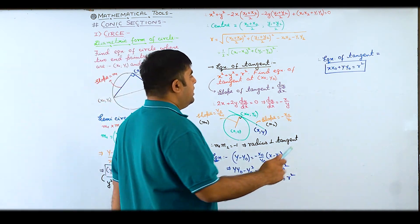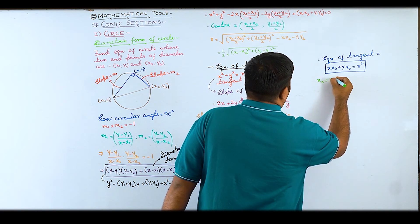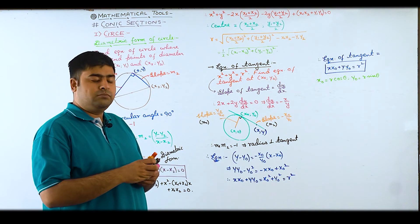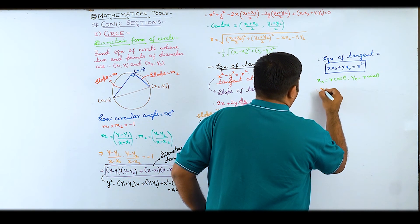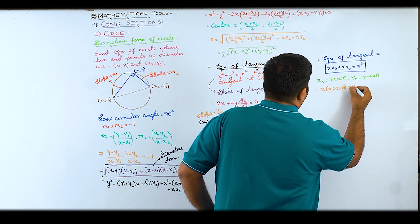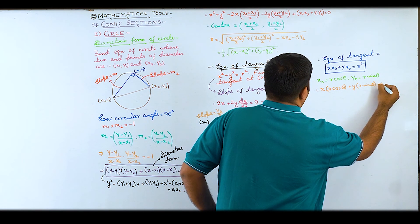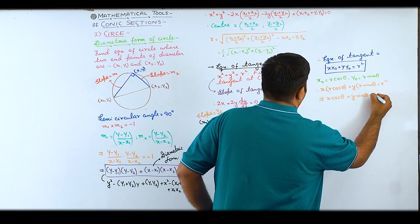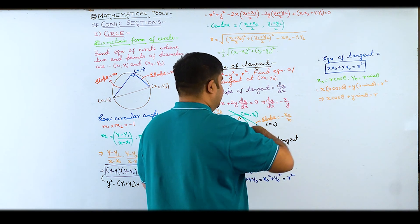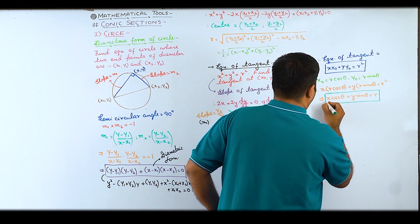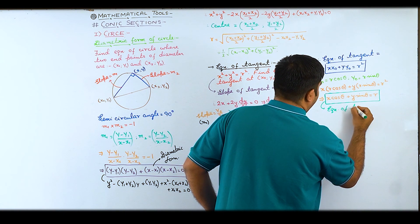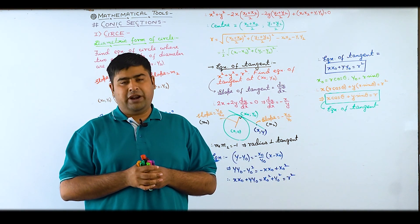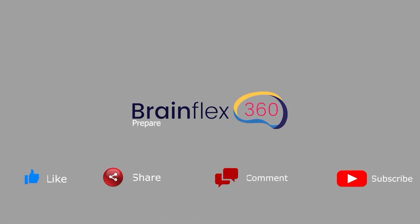In parametric form, substituting x₀ = r cosθ and y₀ = r sinθ, the tangent equation becomes x·r cosθ + y·r sinθ = r², i.e., x cosθ + y sinθ = r. This is another way of writing the equation of tangent. So these are the key facts about circle, and now we move on to the next conic section — that is, parabola.